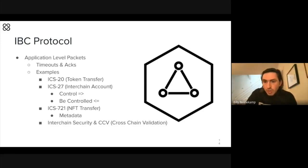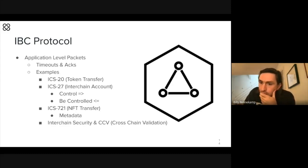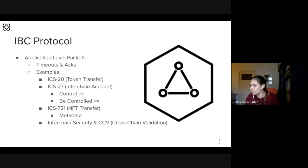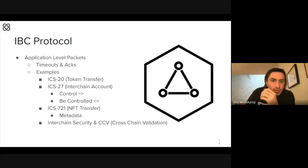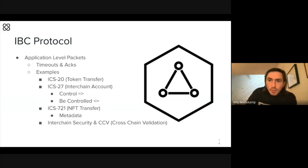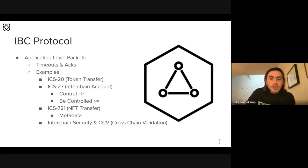Let me just quickly cover these different IBC application types. There's a token transfer. There's interchain accounts, which is a whole conversation. NFT transfers are around the corner. And interchain security — cross-chain validation — is a way to have one validator set secure two different blockchains at the same time.